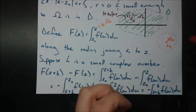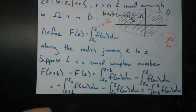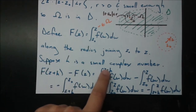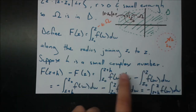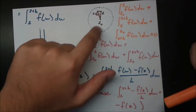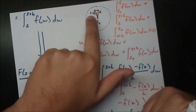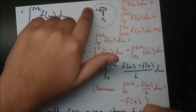Now we're going to suppose h is a small complex number. Whenever we have something defined as a small complex number, we're usually starting to take a derivative. So we have F(z+h) minus F(z), which equals the integral from z₀ to z+h minus the integral from z₀ to z. Small means that h is small enough so that z+h is still inside this disk.